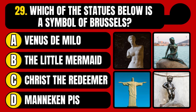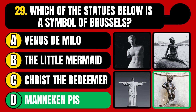Which of the statues below is a symbol of Brussels? Venus de Milo, the Little Mermaid, Christ the Redeemer, or Mannequin Peace? The correct answer is option D, Mannequin Peace.